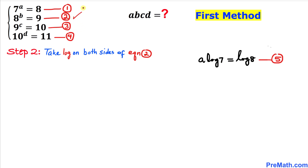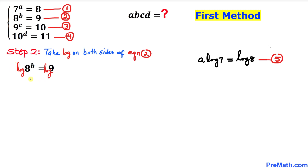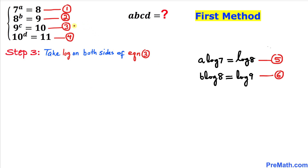Now let's focus on equation two. I've copied it down. Let's take the log on both sides. Once again we can bring this exponent b all the way to the front. Therefore our equation becomes: b times log of eight equals to log of nine. Let me call this equation number six.